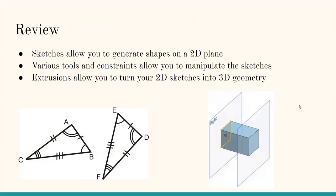For a review: sketches allow you to generate shapes on a two-dimensional plane. You need sketches in CAD work to make your designs. Tools and constraints allow you to manipulate the sketch — like the trim tool to cut the sketch or the equal tool to set parts equal in size. Extrusions let you turn those 2D sketches into 3D geometry, as shown here with this square being extruded into a three-dimensional shape.